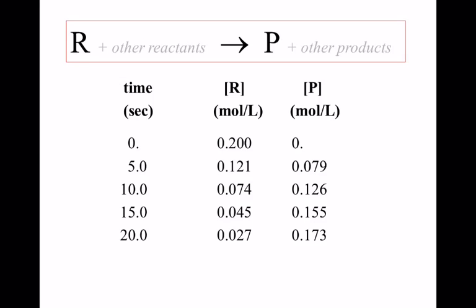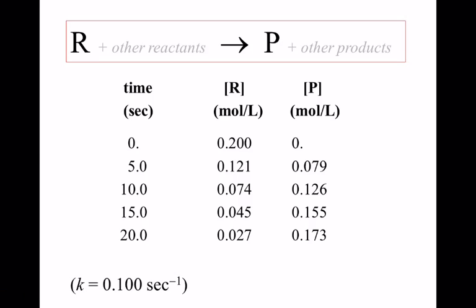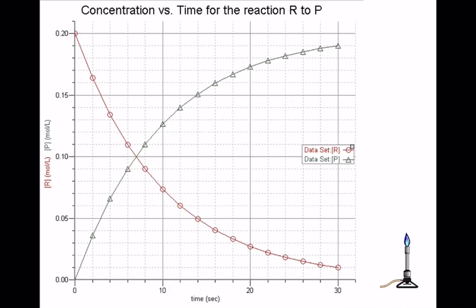The data shows that the rate slows down as time increases. The brackets here mean molar concentration. There's a rate law constant K that we'll probably get to Monday. Here's a plot: the red one is the reactant getting less, and along the axes we have time on the x-axis and molar concentration on the y-axis. The green one is your product building up.